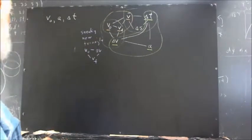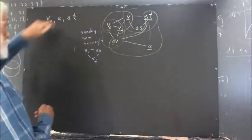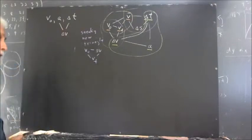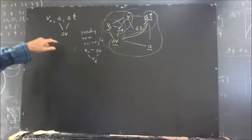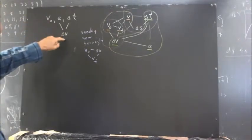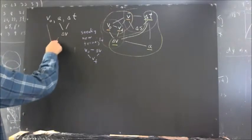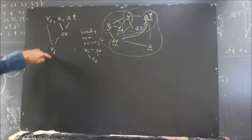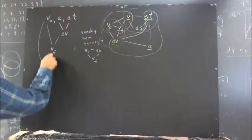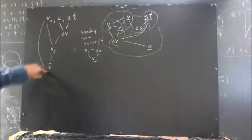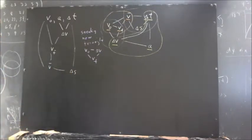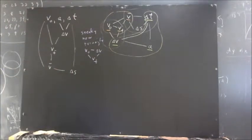Without using a diagram, we should recognize that knowing the acceleration and delta T allows us to calculate delta V. This takes a little practice. Then, knowing V naught and delta V — initial velocity and change in velocity — we can clearly find the final velocity. Knowing initial and final velocity, we can find average velocity, and combining average velocity with delta T gives us delta S. If we understand the relationships, we can draw this triangle and cement our reasoning.